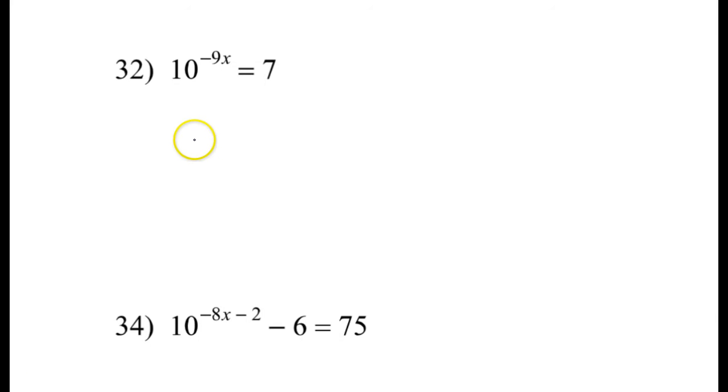Alright, let's solve number 32. There are at least three ways of solving this I can think of off the top of my head, but see how there's only variables on the left side, not both sides. When it's like this, the easiest thing to do is just rewrite it in log form as opposed to doing the log of both sides.